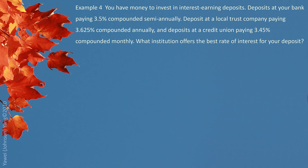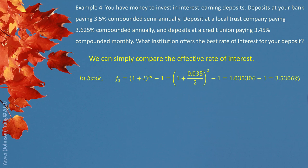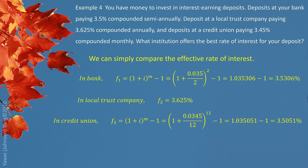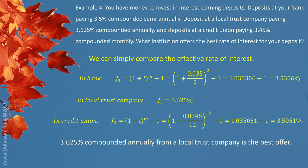Example 4: You have money to invest in interest-earning deposits. Deposits at your bank paying 3.5% compounded semiannually; deposits at a local trust company paying 3.625% compounded annually; and deposits at a credit union paying 3.45% compounded monthly. Which institution offers the best interest rate? We compare the effective rates: the bank's effective rate is 3.5306%; the trust company is already compounded annually at 3.625%; the credit union's effective rate is 3.5051%. So 3.625% compounded annually from the local trust company is the best offer.